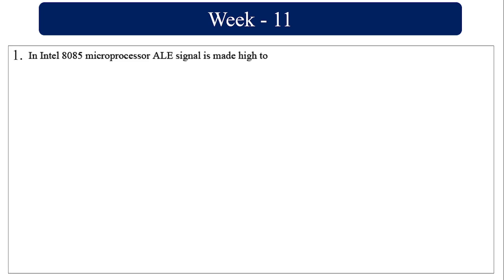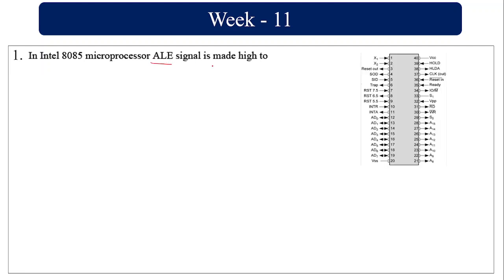In the Intel 8085 microprocessor, the ALE signal is made high. ALE is Address Latch Enable. This is the pin diagram of the 8085 — here AD0 to AD7 is an 8-bit multiplexed bus, and ALE is made one to distinguish address from data on this bus.